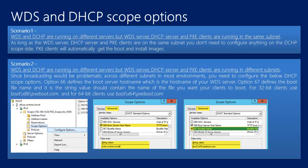Scenario two: WDS service and DHCP service are running on different servers, but your WDS server, DHCP server, and PXE clients are not in the same subnet. Broadcasting would be a problem across different subnets in most environments. What you need to do is configure a few DHCP scope options — option 66 and option 67. You can find these options in the properties of the scope options used for PXE boot, under the Advanced tab. Option 66 specifies the WDS server host name, and option 67 specifies the boot file name that PXE clients will use to boot. For 32-bit, you'll use boot\x86\wdsnbp.com, and for 64-bit clients, boot\x64\wdsnbp.com.